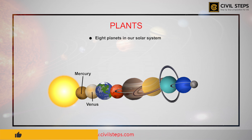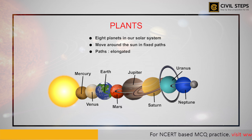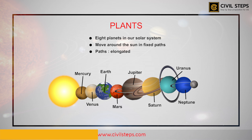The eight planets in order of distance from the Sun are: Mercury, Venus, Earth, Mars, Jupiter, Saturn, Uranus, and Neptune. All these eight planets move around the Sun in their fixed paths, which are elongated. These elongated paths in which the planets move around the Sun are called orbits.